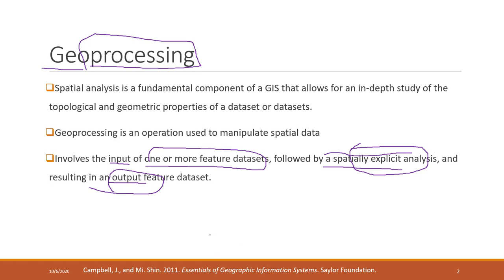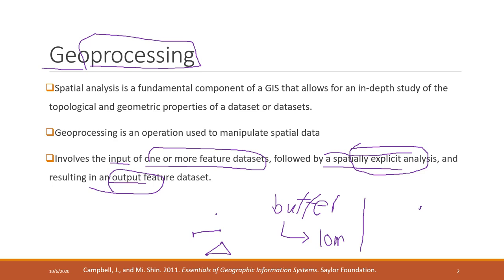The first example we'll discuss is creating a buffer. The input feature can be a point, a polyline, or a polygon. You tell ArcGIS you want to create a buffer, and you specify parameters — for example, a width or radius of 10 meters. For a point input, the buffer output will be a circle. For a polyline, the buffer will extend along the line, and for a polygon, the buffer will be another polygon surrounding your input feature.